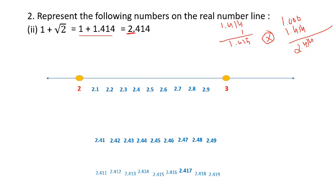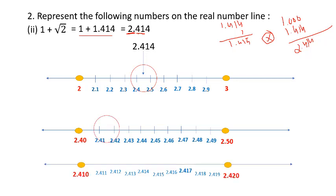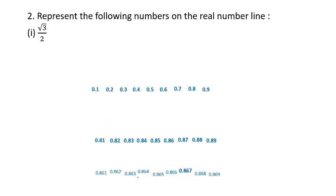To represent 2.414 on the number line: since it lies between 2 and 3, draw that segment. At the first decimal place, 2.4 lies between 2.4 and 2.5. Zoom in - at two decimal places, 2.41 is between 2.41 and 2.42. Zoom in again - at three decimal places, 2.414 is right here. Hence this point is your answer: 2.414.